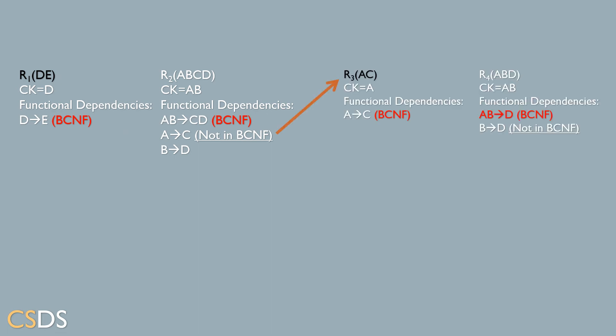We create two sub-relations R3 and R4. R3 contains attributes AC with candidate key A, and the functional dependency A→C is in BCNF because A is the candidate key. Moving on to R4, the candidate key is AB. The functional dependency AB→D holds BCNF, but the next functional dependency B→D is not in BCNF since B is not the candidate key AB of the relation.